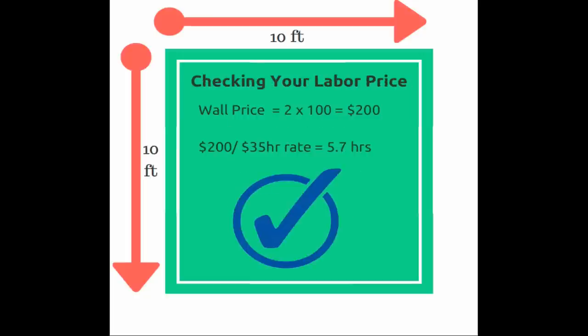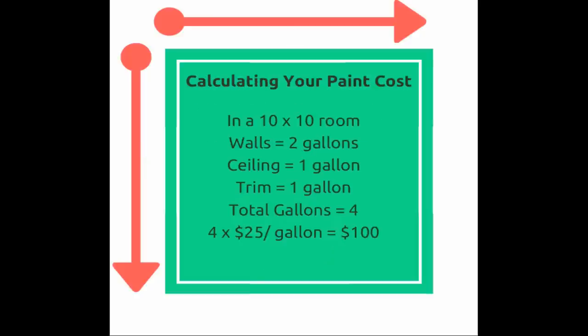You can go back and check this with the trim price and ceiling price as well, just to make sure. Now we need to talk about paint cost. In a 10x10 room, you're going to use about two gallons of paint for the walls, a gallon for the ceiling, and a gallon for the trim. You won't use exactly two gallons but you'll need to buy that amount since paint is sold by the gallon. Just buying gallons is what I'd recommend.